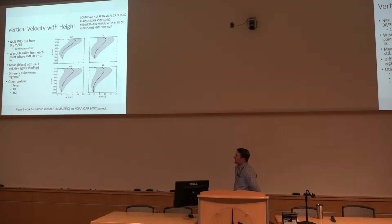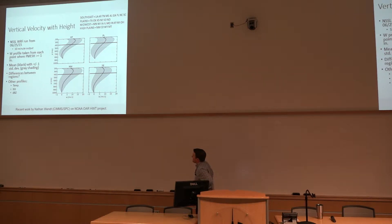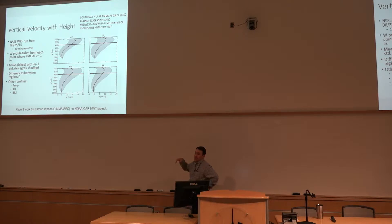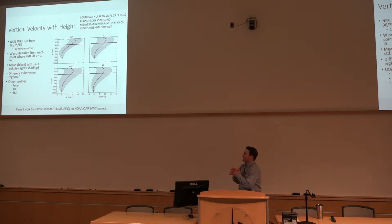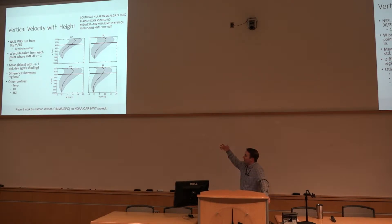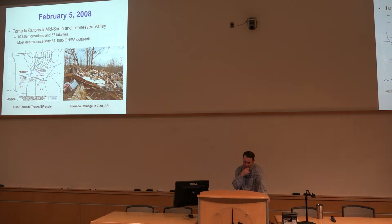I've referenced the updraft speed — we generally did a search from the ground up to 400 millibars, which is what's in the models currently. Work done by Nathan Wendt at SPC shows that if you plot the vertical distribution of updraft speed, it actually peaks well above 400 millibars. So when you extract it just below 400 millibars you're really not getting the peak vertical velocity. We talked to Jack Kane who set the 400 millibar threshold back in the day, and he didn't really have a very good reason for it — that's what happens a lot of times in research. You actually get a little better statistical skill if you grab the maximum, in terms of relating it to hail potential and that type of thing.